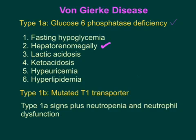There is another type of Von Gierke disease — type 1b — caused by a mutation in the T1 transporter. The glucose-6-phosphatase enzyme is located in the lumen of the endoplasmic reticulum, so glucose-6-phosphate must enter the lumen via the T1 transporter. Once inside, glucose-6-phosphatase converts glucose-6-phosphate into glucose plus inorganic phosphate.